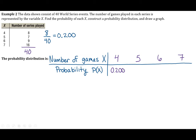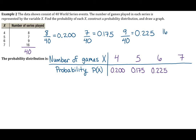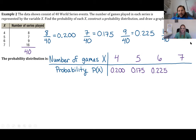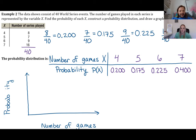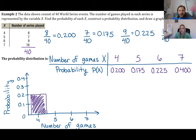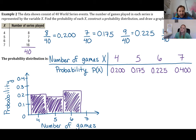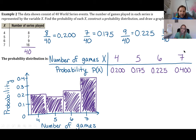For five games: 7/40 = 0.175. For six games: 9/40 = 0.225. For seven games: 16/40 = 0.4. Plotting these on a histogram with values 4, 5, 6, 7 on the x-axis, we can see the series is more likely to last six or seven games than four or five.